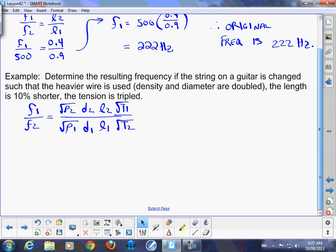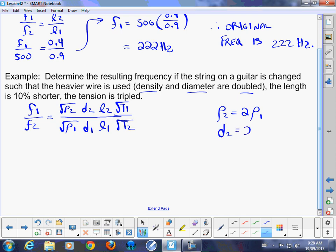So we need to figure out what the relationships are here. So let's talk about the first one that was mentioned, density and diameter. They're both doubled. So the new density is equal to two times the original density. The diameter is two times the original diameter. The length is 10% shorter, so l2 is now 90% of l1.